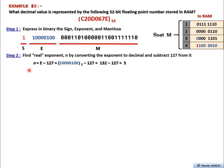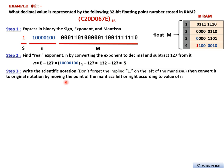Next, find the real exponent n = E minus 127. Convert the exponent from binary to decimal, then subtract 127. The result is positive 5 in this case — not negative like example 1. That means in step 3, we move the decimal point to the left by 5 places.